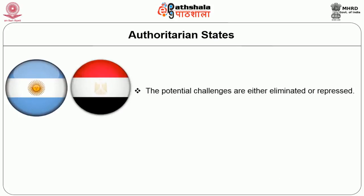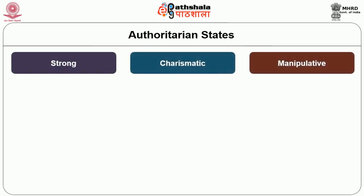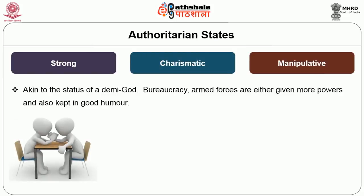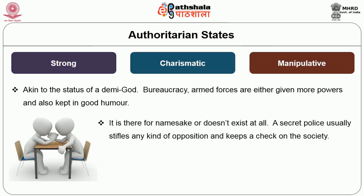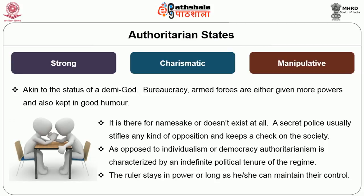Potential challenges are either eliminated or repressed. Power in an authoritarian state is centralized; new issues are raised and lies can be concocted to remain in power. The leader is usually strong, charismatic, and manipulative — akin to the status of a demigod. Bureaucracy and armed forces are either given more power or kept in good humor. Opposition exists only in name or doesn't exist at all. A secret police usually stifles any opposition. Authoritarianism is characterized by an indefinite political tenure; the ruler stays in power as long as he can maintain control.